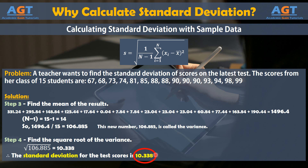That tells the teacher that students have a fairly wide performance on her test. If the results were an average score of 90 with a standard deviation of 3, he or she might assume that students in class were learning and retaining the knowledge as expected.